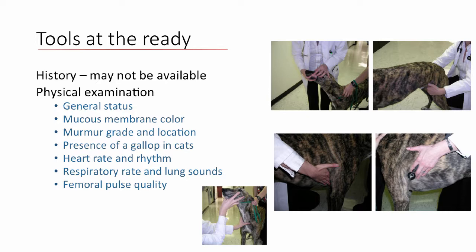Heart rate and rhythm are important, as are respiratory rate and lung sounds — especially if we're worried about a patient that might be clinical for heart disease. Femoral pulse quality can help direct us: really poor, weak pulses in a young patient with a left basilar murmur might suggest SAS over pulmonic stenosis, whereas really bounding pulses might suggest a PDA. We often forget about viewing right heart pressures by assessing jugular pulses and abdominal palpation — how far the jugular pulse goes up the neck gives us insight into right atrial pressure and CVP.